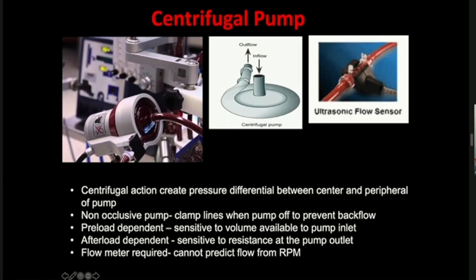This pump is very preload and afterload dependent — sensitive to the volume available at the pump inlet (preload dependent) and to any resistance at the pump outlet. Any obstruction or kinking can interrupt the pump and cause fluctuations in motor flow. Another characteristic of the centrifugal pump is that you cannot reliably predict how much flow you will achieve from a given RPM setting. Unlike a roller pump with a consistent linear relationship, for a centrifugal pump you need to titrate the RPM at the bedside and observe the resulting flow.